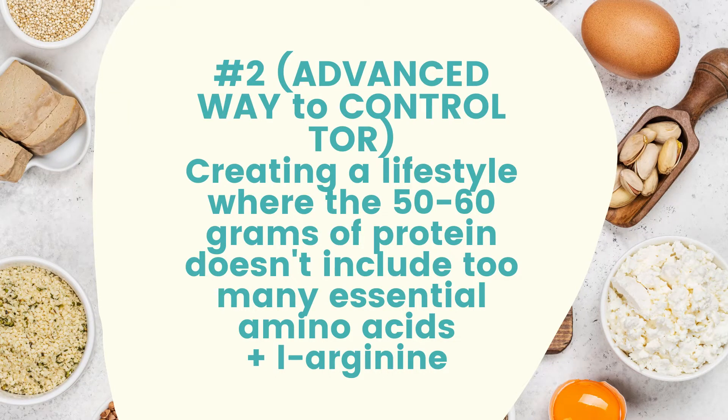The next way to control your TOR levels — and this is a really advanced way — is creating a lifestyle where the 50 to 60 grams of protein a day that you eat doesn't include too many essential amino acids and arginine. This is extremely interesting and that's the core of the debate of protein from animals and from plants. Amino acids are the building blocks of protein — the tiny elements that build up the proteins that we eat. Out of the 21 amino acids that build up protein, about 9 of them are essential. These are amino acids the body cannot manufacture.